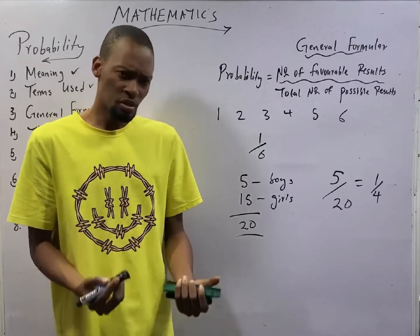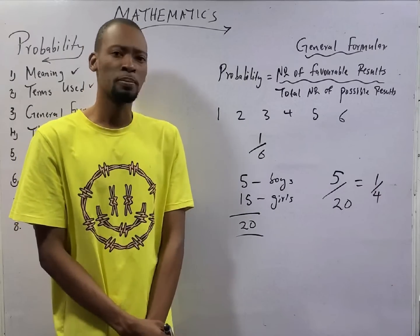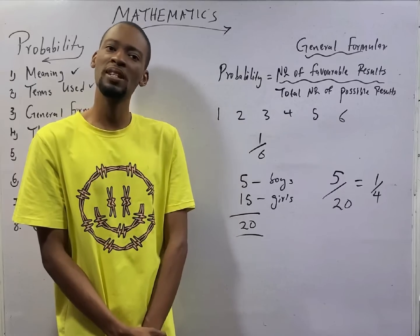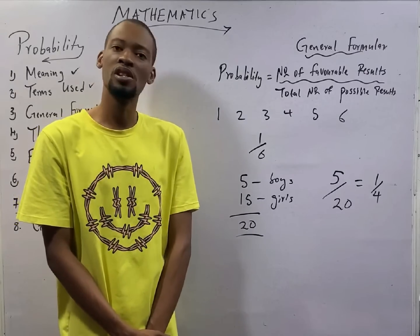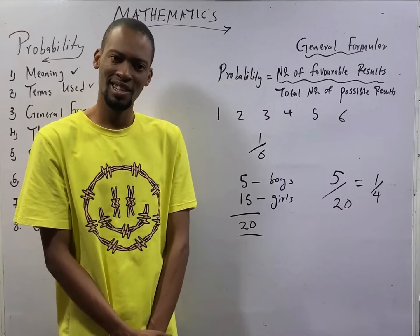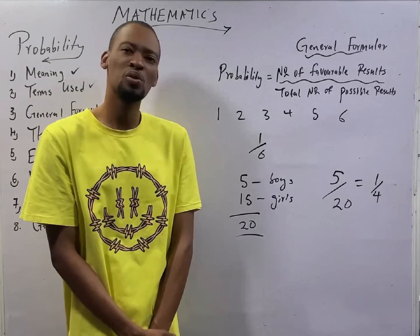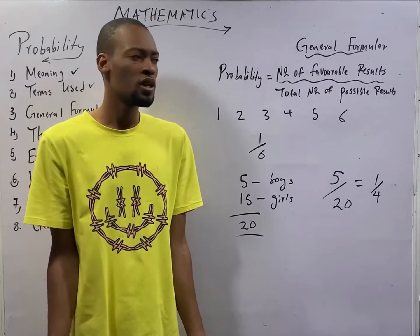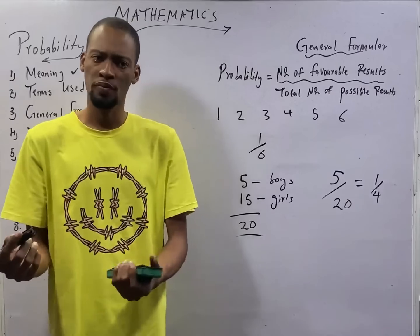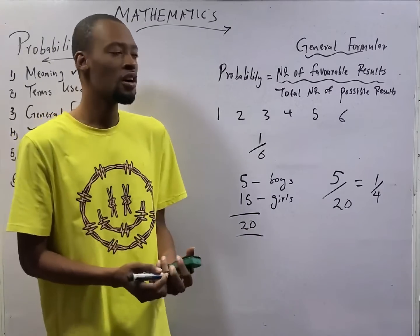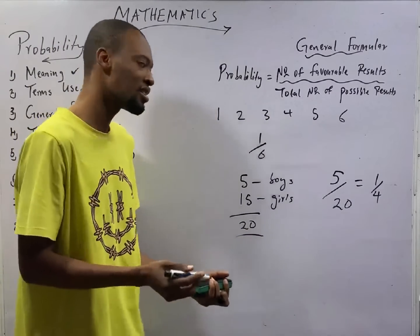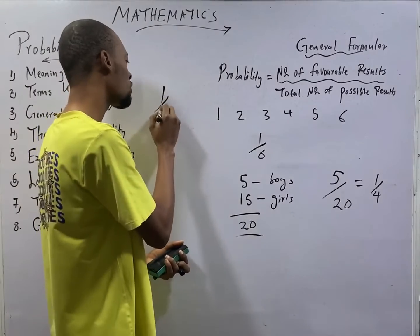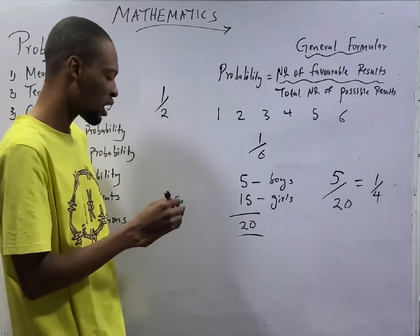Now, a student sits for an exam. What is the probability that the student is going to pass? For our exam, you have just 2 outcomes. Pass or fail. Since you have 2 outcomes, the probability of passing is 1 out of the 2 total outcomes.